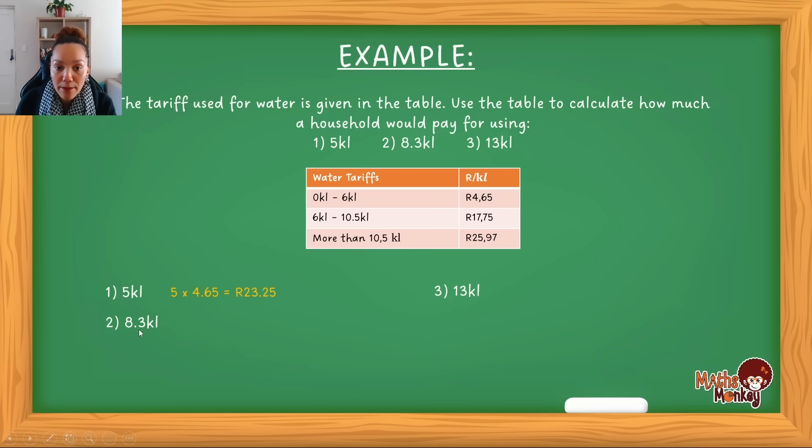Now let's look at a family that uses 8.3 kiloliters. Now what I want you to know and to note, as I mentioned before, the first 6 is still the same price. So the 6, which is this range, times the price for each is 27.90. So this is the price for the first 6 kiloliters that they use. After the 6 kiloliters, you'll see that there's still 2.3 kiloliters that we need to be charged for. This now falls in the second interval range. So then we'll go 2.3 multiplied by, now the tariff for, if you use more than 6, is 2.3 times 17.75.